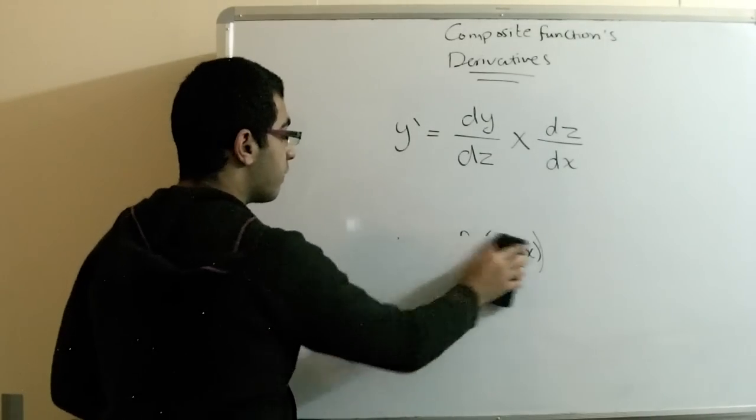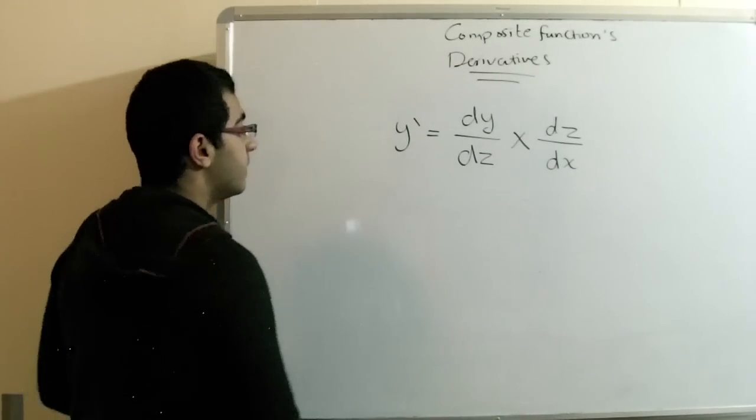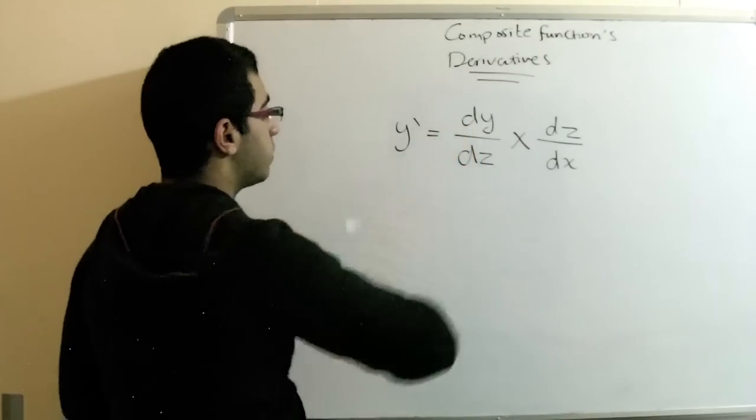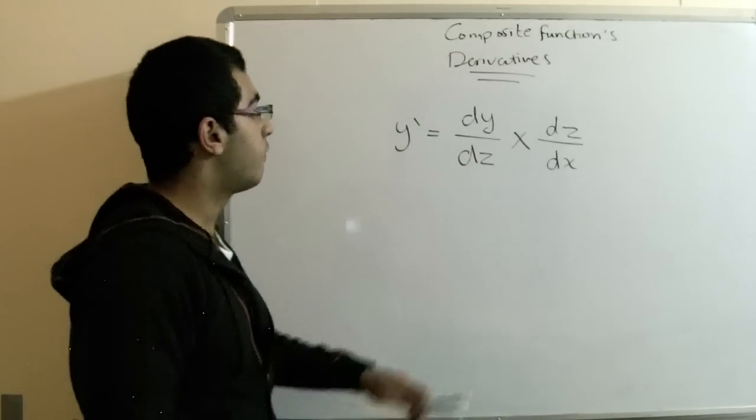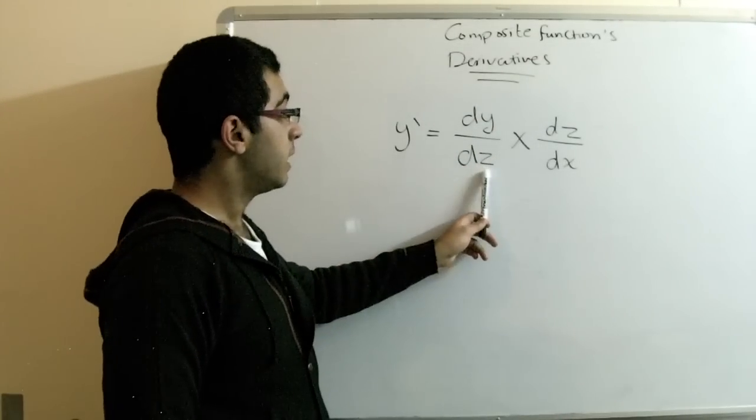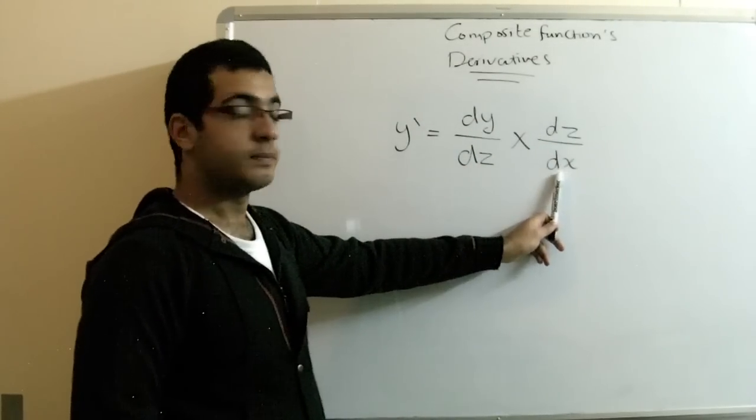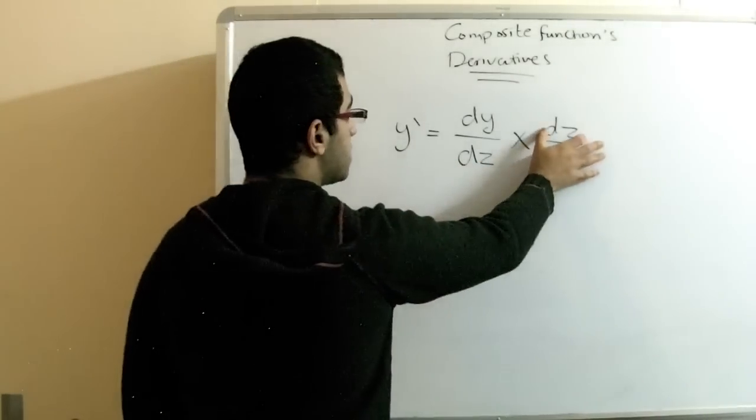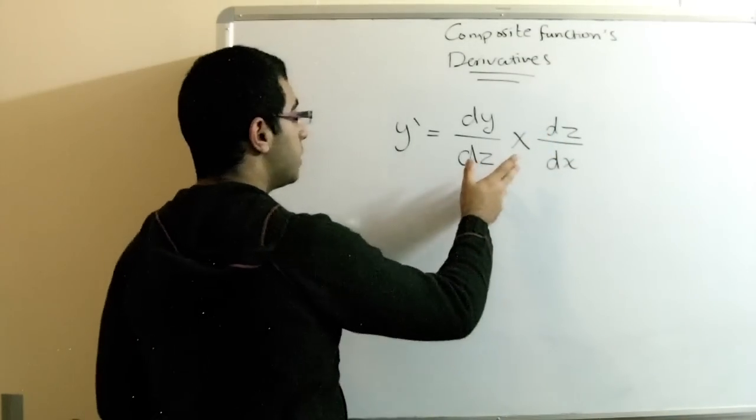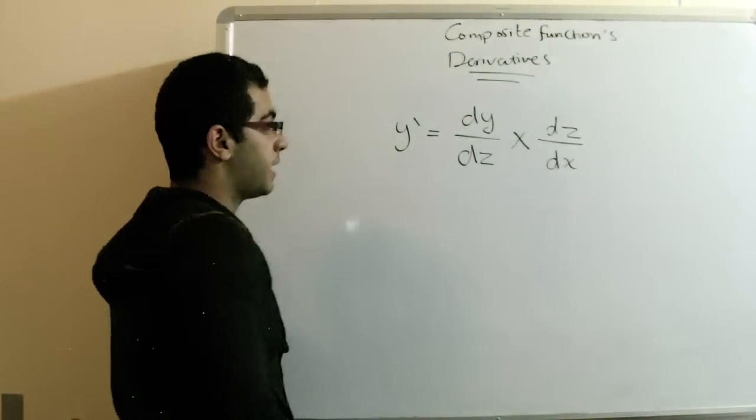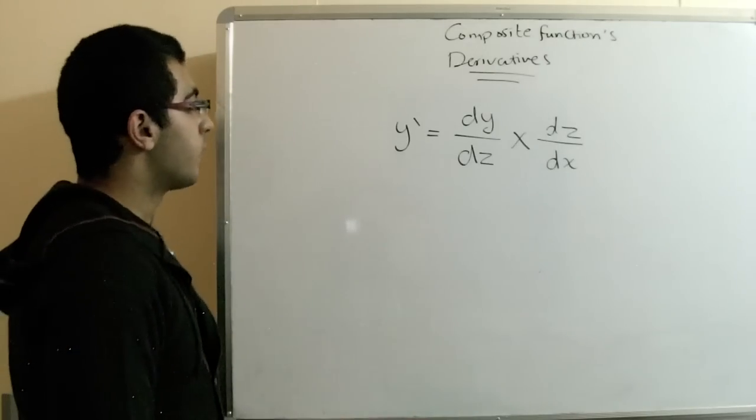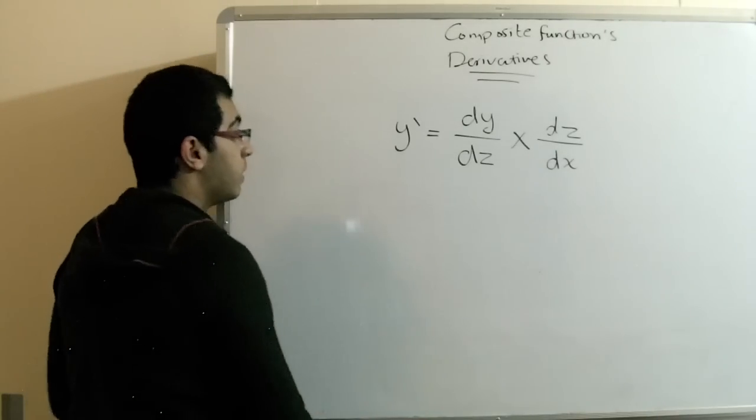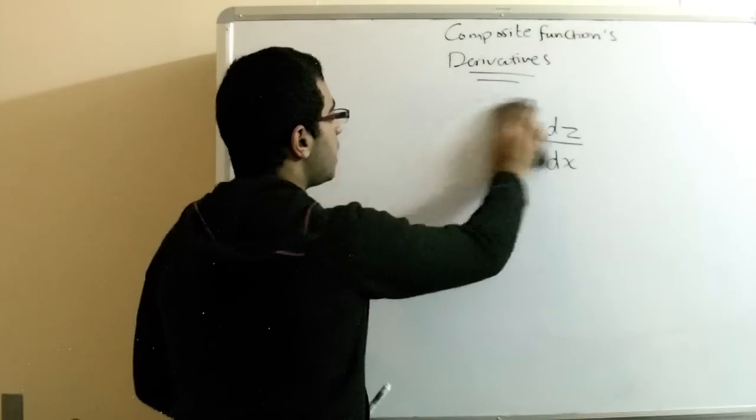And the dy over dx is the derivative. The d here refers to the derivative. The derivative of y relative to z, and here is the derivative of z relative to x. And these cancel, so those two go together to get the dy over dx. This is the rule.